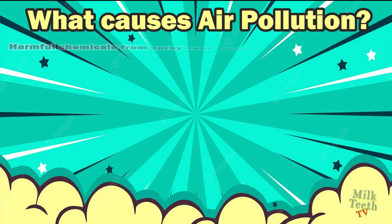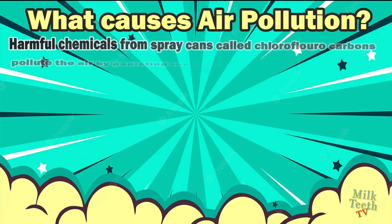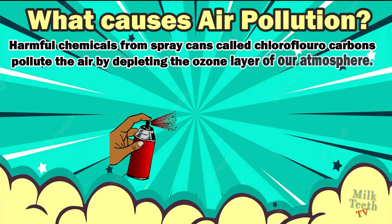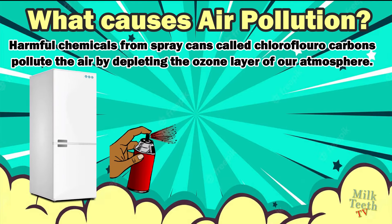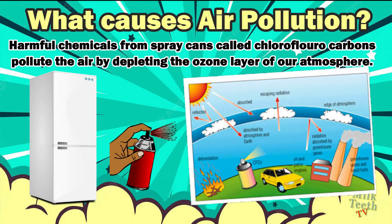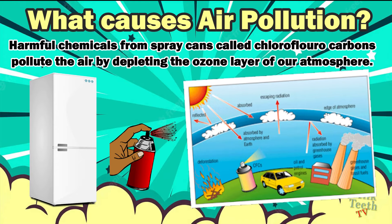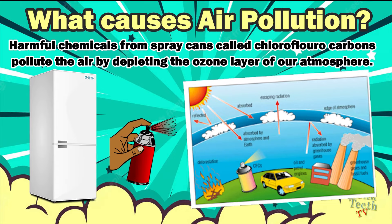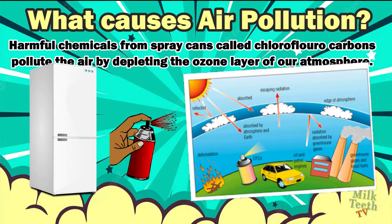Along with smoke and dust, there is one more aspect of air pollution: harmful chemicals from spray cans called chlorofluorocarbons (CFCs), and also from gadgets like refrigerators and air conditioners, pollute the air by depleting the ozone layer of our atmosphere. The ozone layer is a very important layer that protects us from the harmful ultraviolet rays of the sun. Due to its depletion, the sun's ultraviolet rays can now easily penetrate our atmosphere, causing diseases like skin infections and skin cancers in humans.